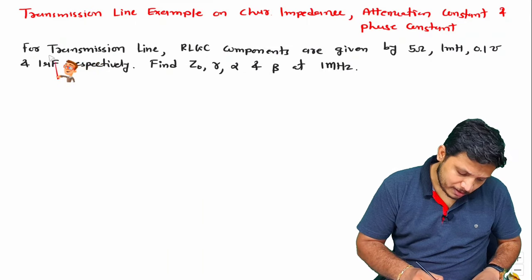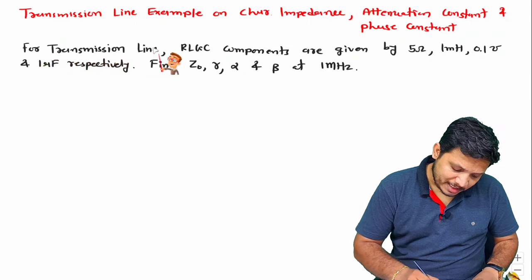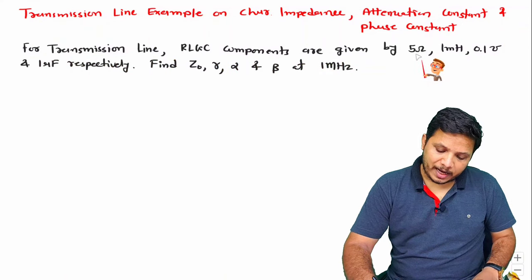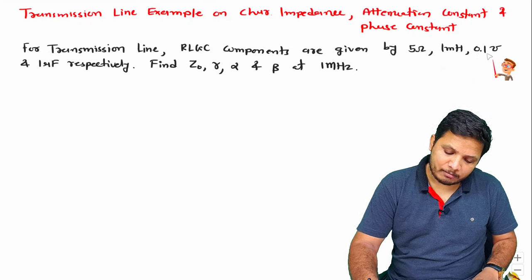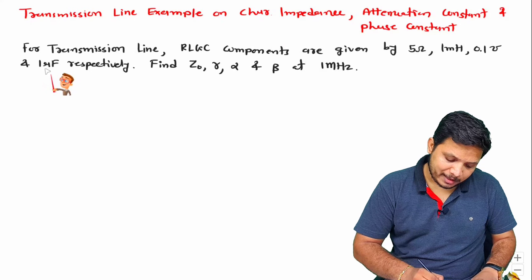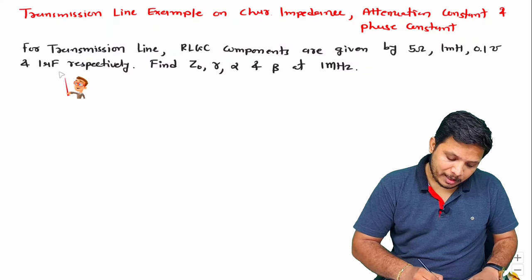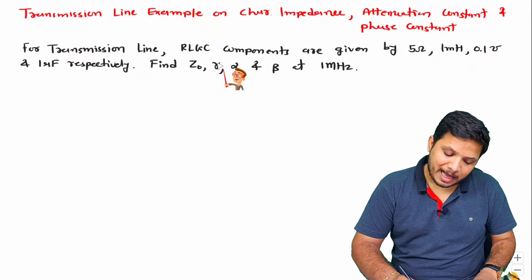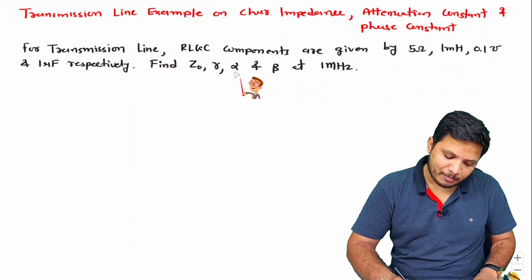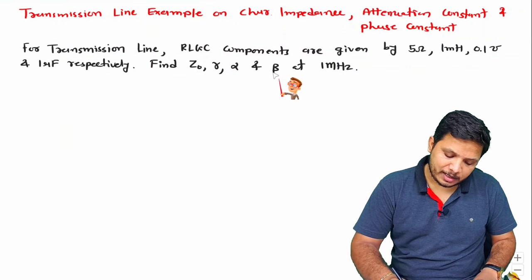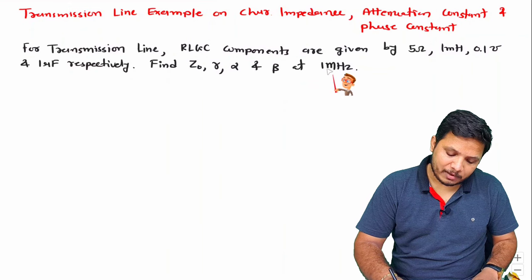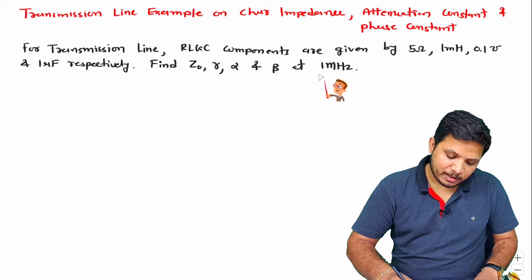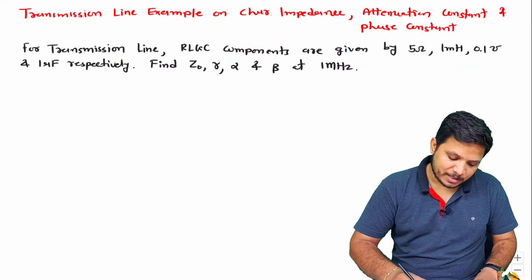The question is: for a transmission line, the RLGC components are given as R = 5 ohm, L = 1 millihenry, G = 0.1 mho, and C = 1 microfarad respectively. We are required to identify Z0 (characteristic impedance), gamma (propagation constant), alpha (attenuation constant), and beta (phase constant) at a frequency of 1 megahertz.